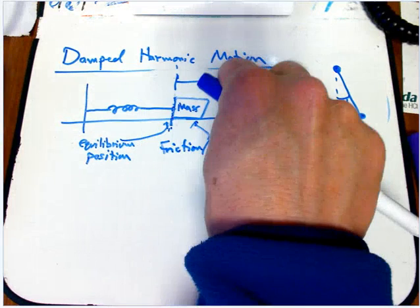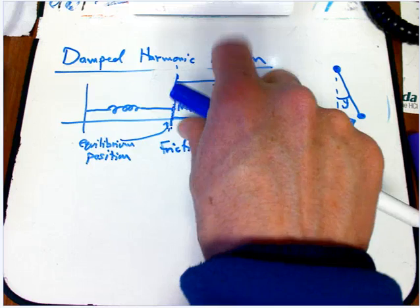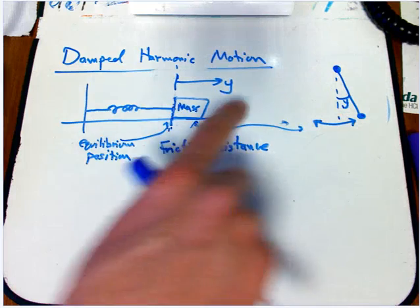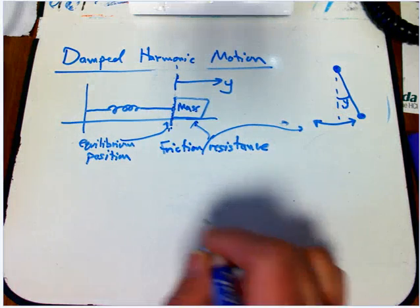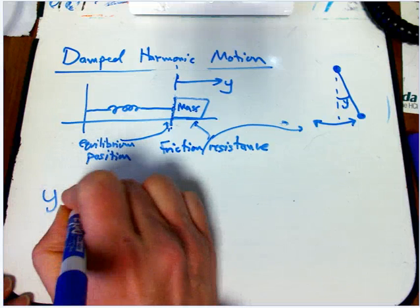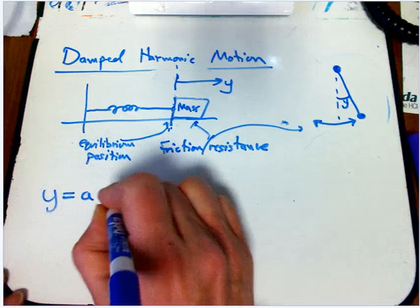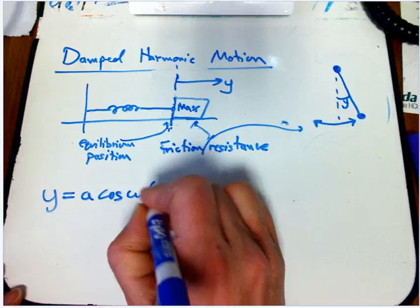We drag this mass to the right or give it a push and let it go, and it's going to oscillate forever. We're going to get things like sines and cosines: y equals a, either cosine or sine, let's say cosine of omega times t.